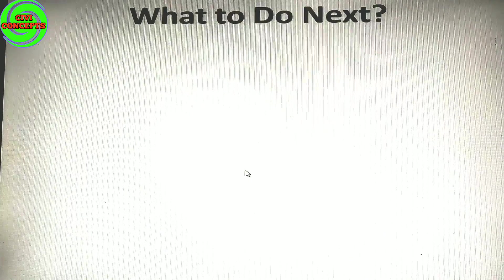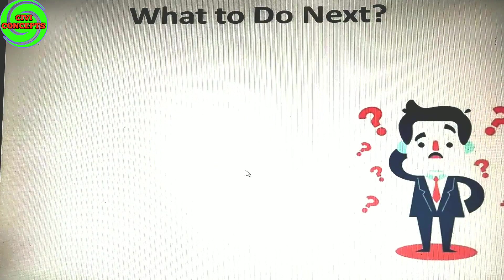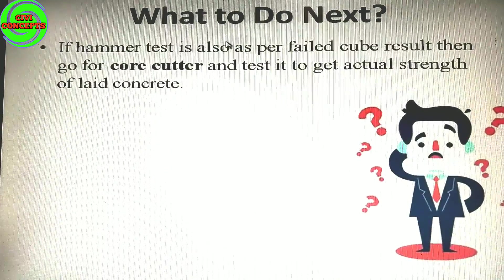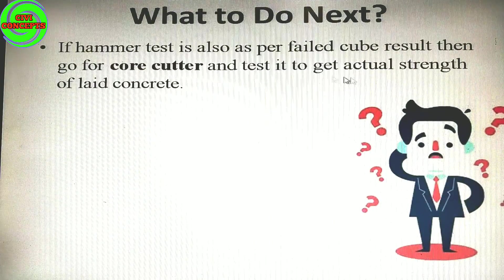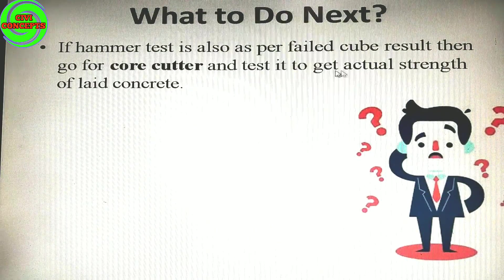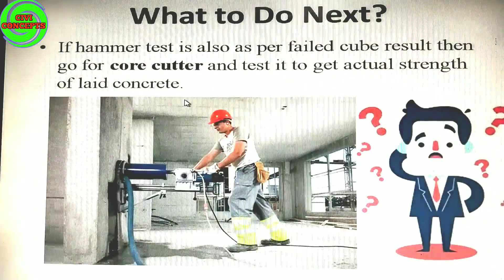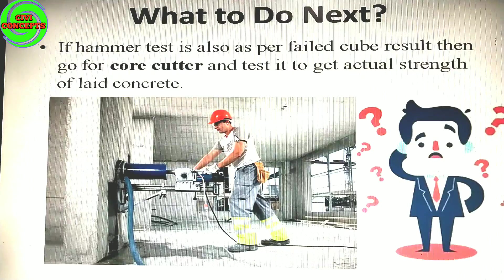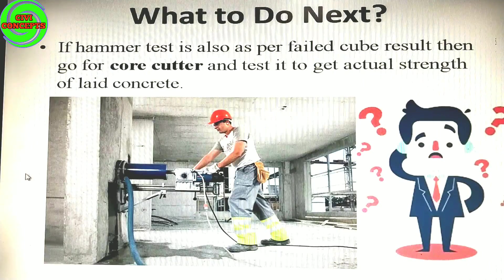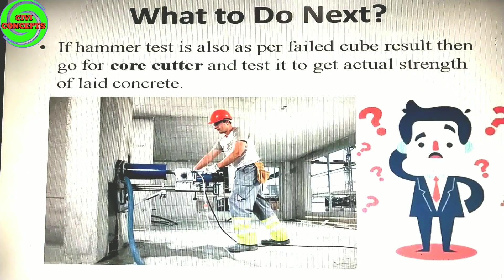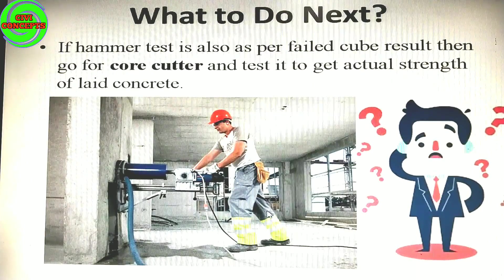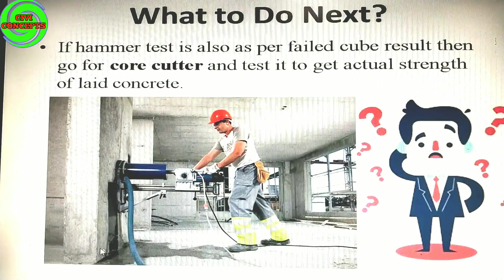After rebound hammer test, what to do next? If the hammer test result also fails, then go for the core cutter test to get the actual strength of the in-place concrete. You take a core from your cast slab — approximately 30 cm height and 50 mm diameter — and test it, similar to cube testing but as a cylinder sample. This is the core cutter machine used for this purpose.